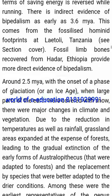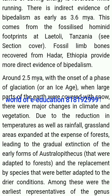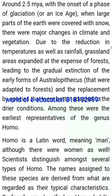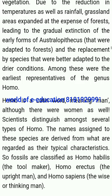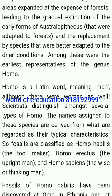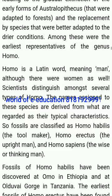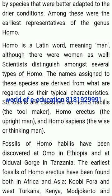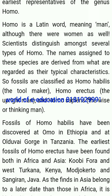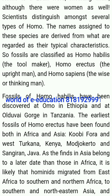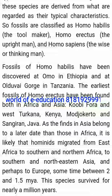Around 2.5 million years ago, with the onset of a phase of glaciation — an ice age when large parts of the earth were covered with snow — there were major changes in climate and vegetation. Due to the reduction in temperatures as well as rainfall, grassland areas expanded at the expense of forests, leading to the gradual extinction of early forms of Australopithecus that were adapted to forests, and the replacement by species better adapted to the drier conditions. Among these were the earliest representatives of the genus Homo. Homo is a Latin word meaning man. Scientists distinguish amongst several types of Homo: fossils are classified as Homo habilis the toolmaker, Homo erectus the upright man, and Homo sapiens the wise or thinking man.